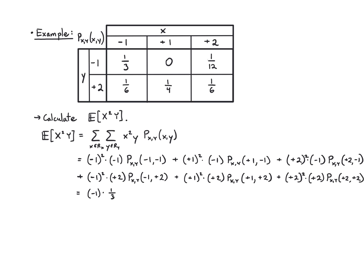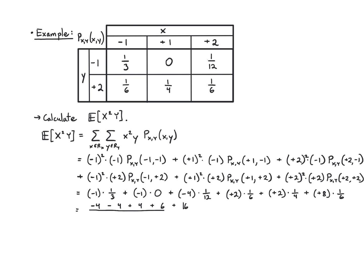Substituting the joint PMF values: −1·(1/3) + (−1)·0 + (−4)·(1/12) + 2·(1/6) + 2·(1/4) + 8·(1/6). Combining over 12: (−4 + 0 − 4 + 4 + 6 + 16)/12... giving 18/12 = 3/2. So E[x²y] = 3/2.